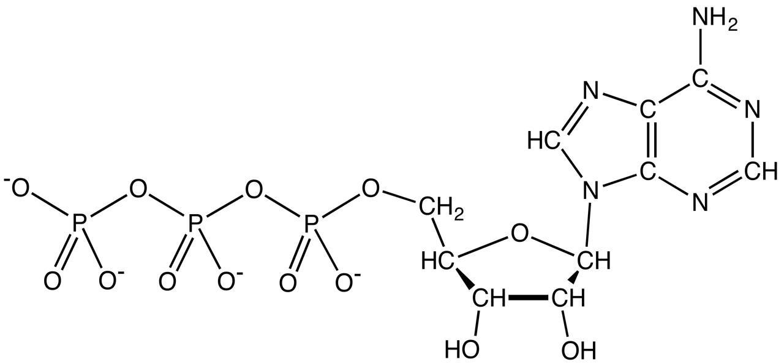The inner membrane contains an antiporter, the ADP/ATP translocase, which is an integral membrane protein used to exchange newly synthesized ATP in the matrix for ADP in the intermembrane space.